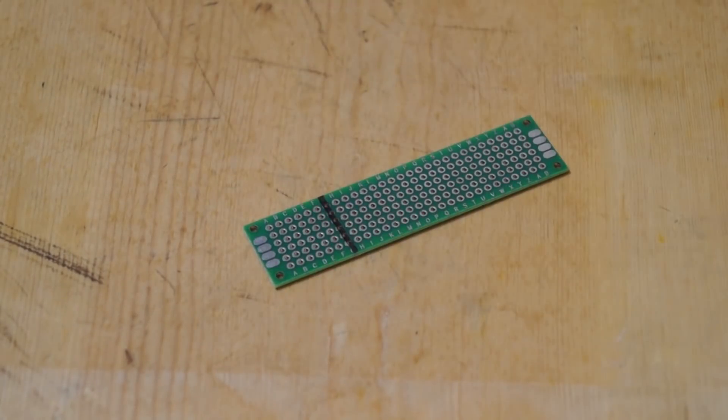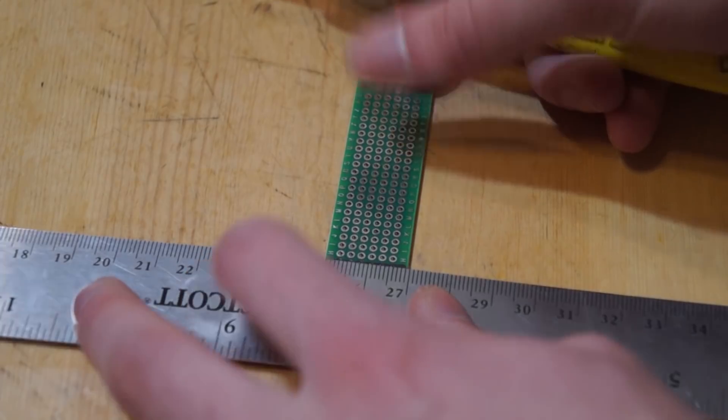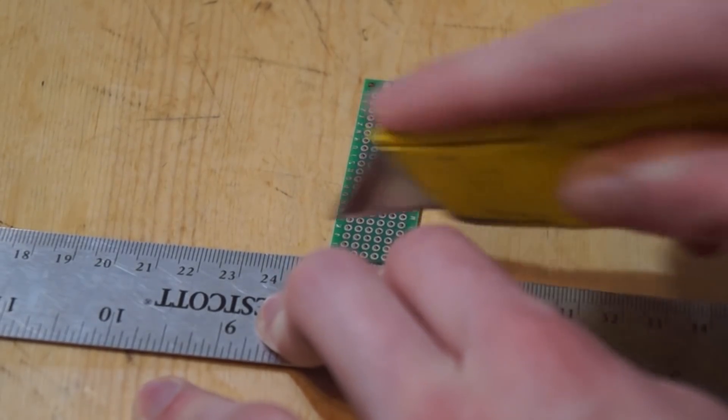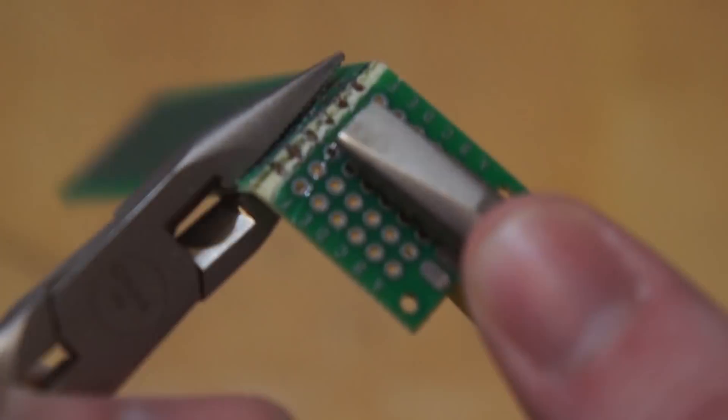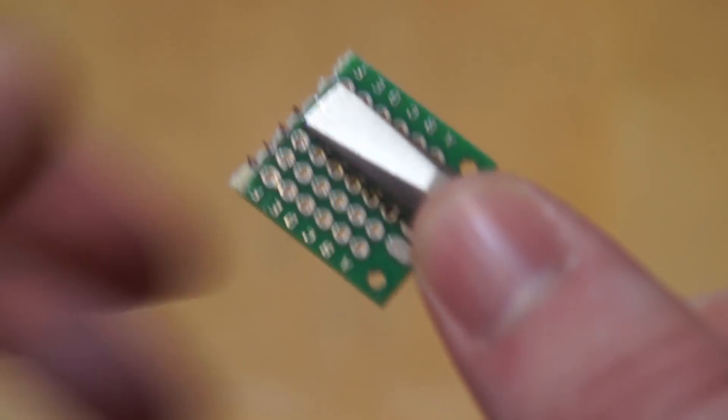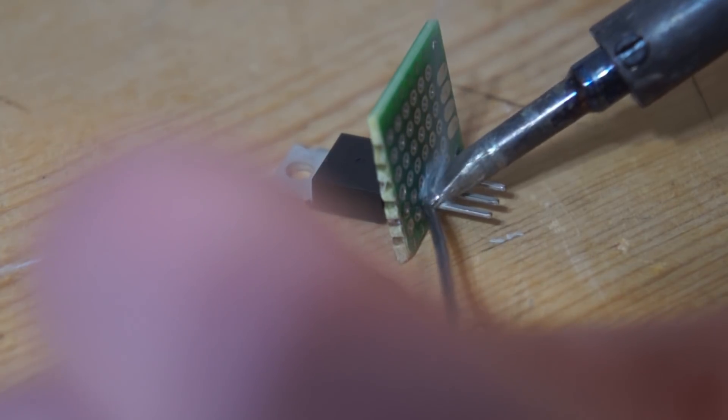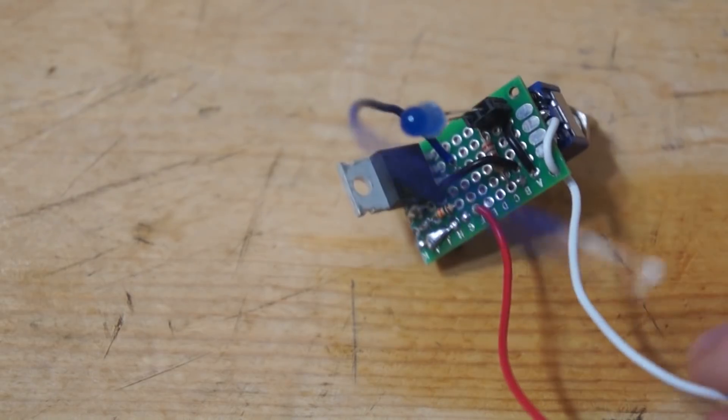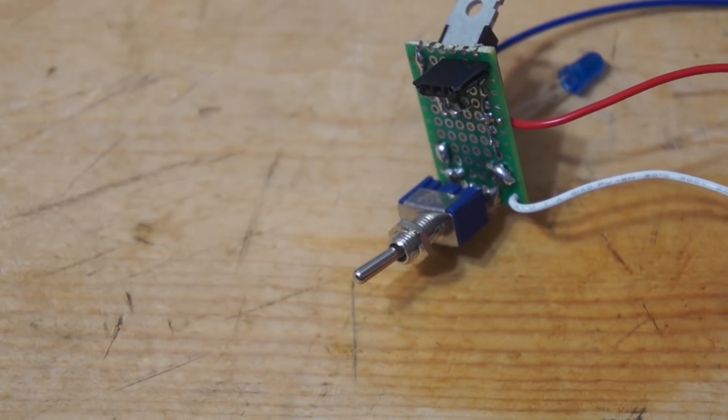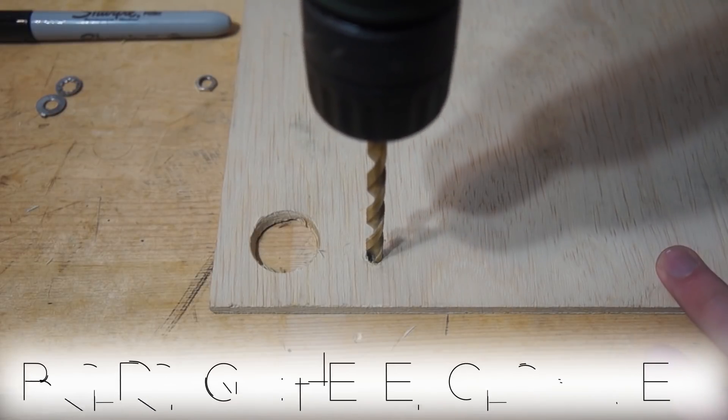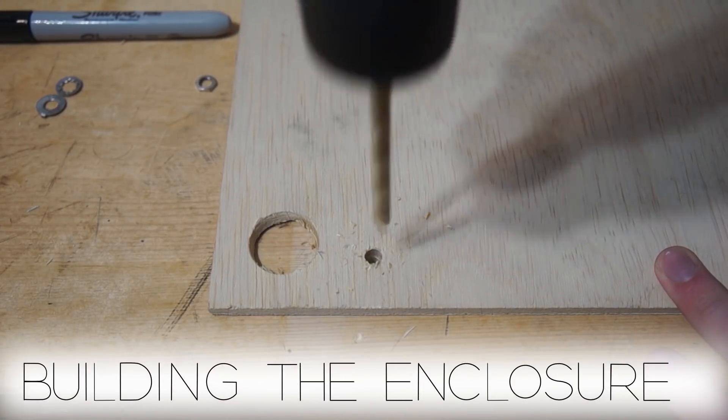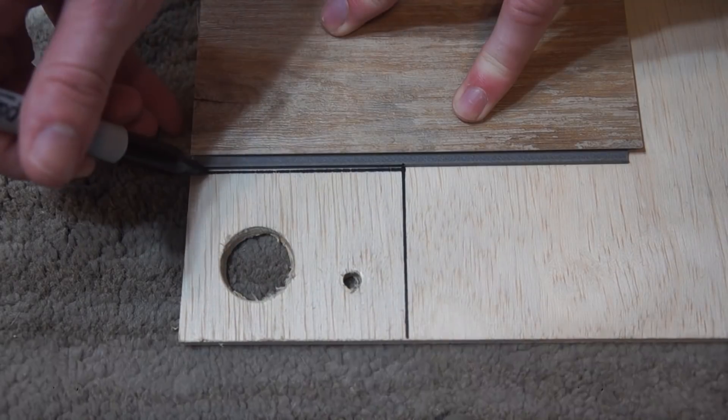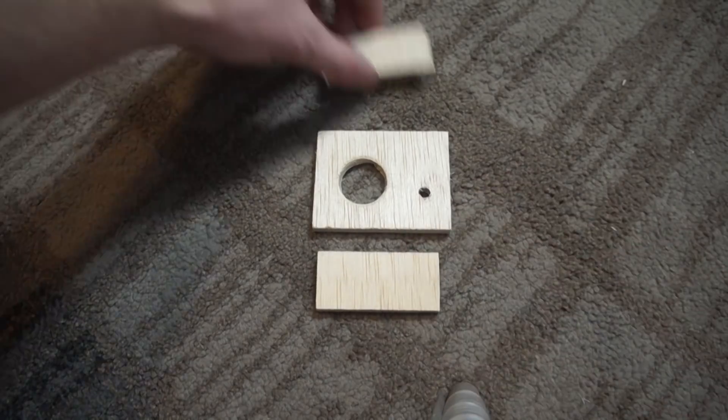I'm going to now use some perf board to put everything together. After soldering everything, this is what it came out to. Now I'm going to build a small enclosure around the perf board so that there's no live electricity accessible to the user.